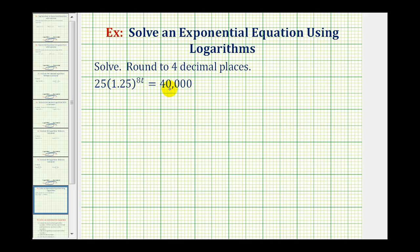To solve an exponential equation like this, the first step is to isolate the exponential part, or isolate 1.25 raised to the power of 8t, which means the first step is to divide both sides by 25. On the left side, 25 divided by 25 simplifies to one, so we have 1.25 raised to the power of 8t equals 40,000 divided by 25 is equal to 1,600.